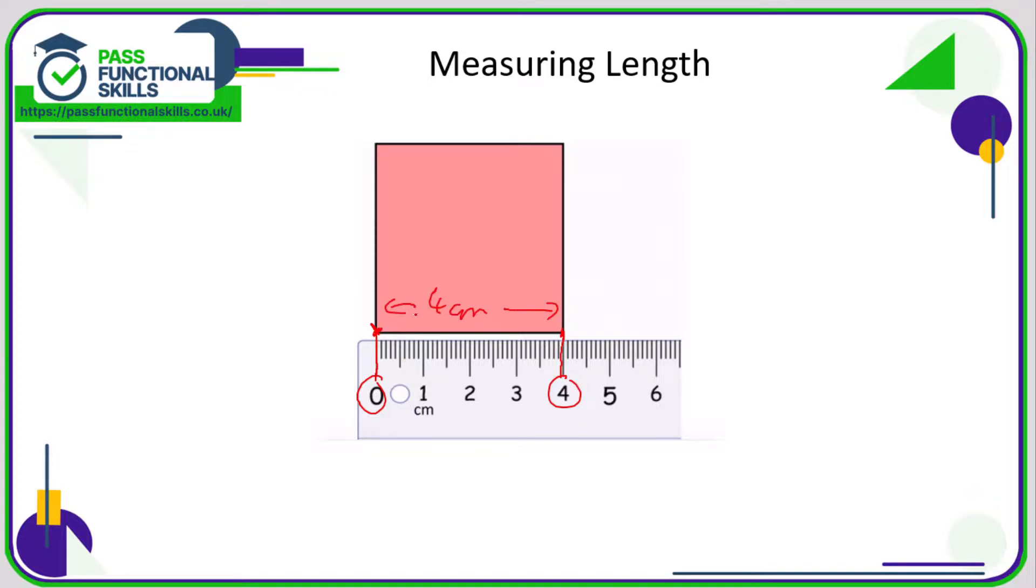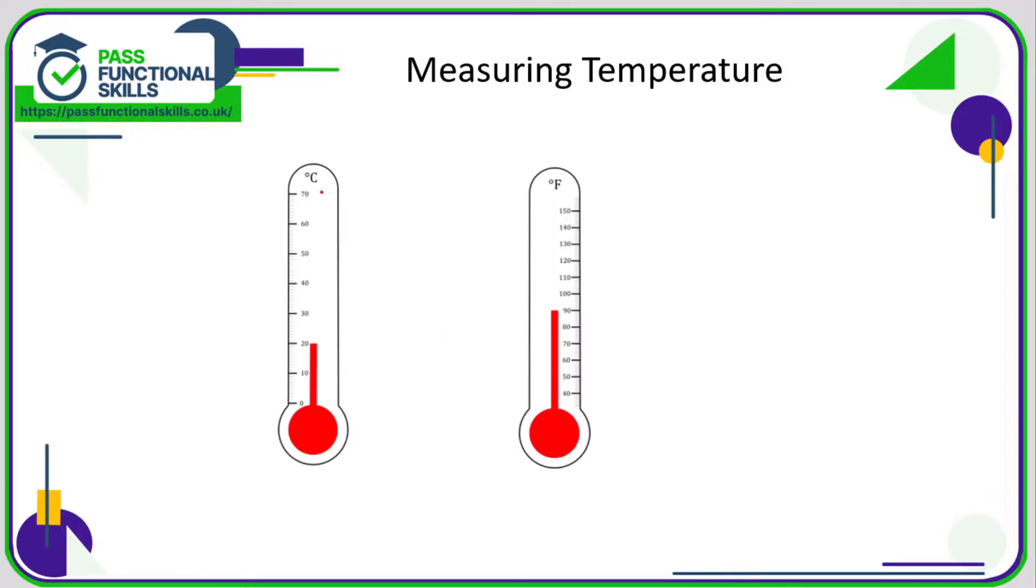Measuring temperatures - you might be asked to read a temperature from a thermometer, and it might be in degrees Celsius or degrees Fahrenheit. It doesn't matter whether it's Celsius or Fahrenheit, the skill is the same. Just see how far up the mercury rises, or the colored liquid inside the thermometer. On the left hand side here we can see it goes up to 20, maybe it's slightly under 20, but I think 20 is an acceptable estimation, so that is 20 degrees Celsius. On the right hand side, the red goes up to 90, so that is 90 degrees Fahrenheit.